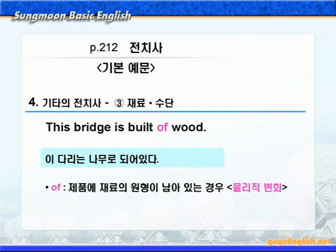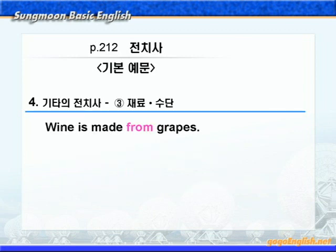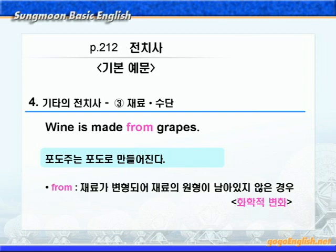다음으로 from을 살펴보죠. '포도주는 포도로 만들어진다'는 뜻인데요. 이 경우처럼 재료가 변형되어서 제품에 재료의 원형이 남아있지 않은 화학적 변화인 경우에는 전치사 from을 씁니다. 쉽게 설명해서, 포도주를 보면 포도가 보이지 않죠? 이런 화학적인 변화를 나타내면 from을 쓴다는 것입니다. 앞에서 설명한 of와 비교해 보시기 바랍니다.